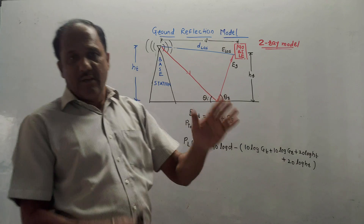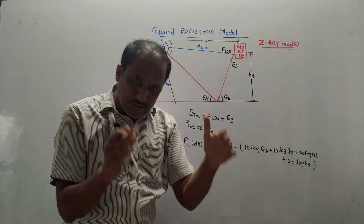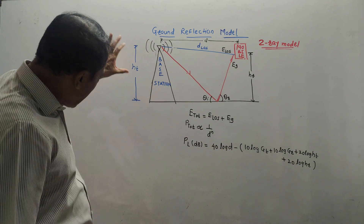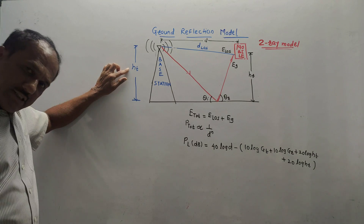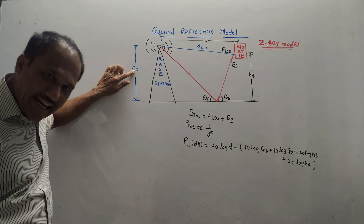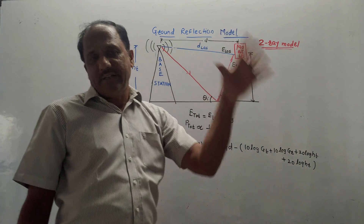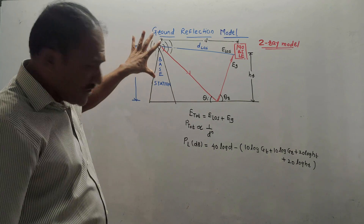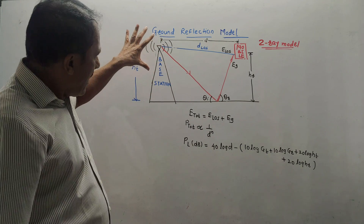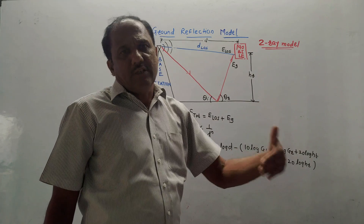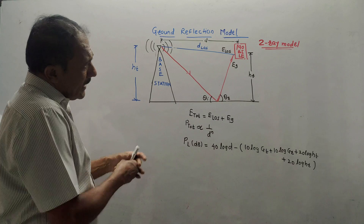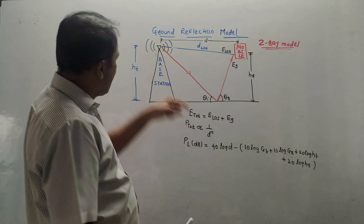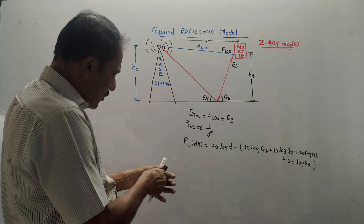This is the base station, which is responsible for transmitting the signals. Its height is denoted by HT — H is height, T stands for transmitting side, so HT is the height of the transmitting antenna. The height of the base station is much larger in order to provide signal propagation for longer distances. In this model, two types of rays are considered. The first is shown by a blue line.